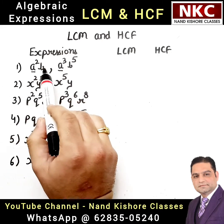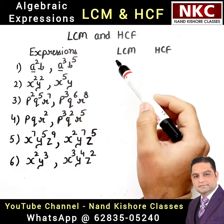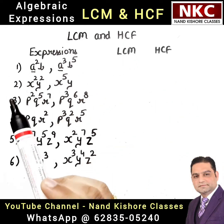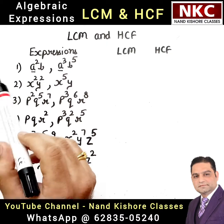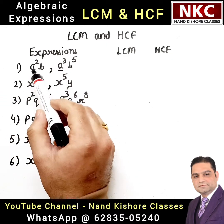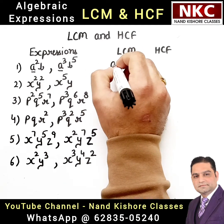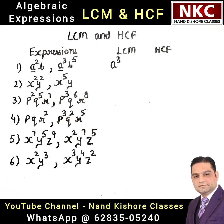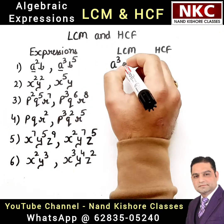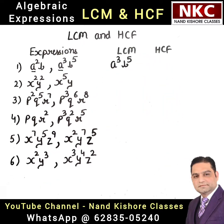The first question has A square B and A cube B to the power 5. Let us first discuss about LCM. While writing LCM, we need to take the bigger exponent. From A square and A cube, the bigger one is A cube, so we write A to the power 3. From B and B power 5, we take the bigger number, B to the power 5. This is the LCM of the first question.